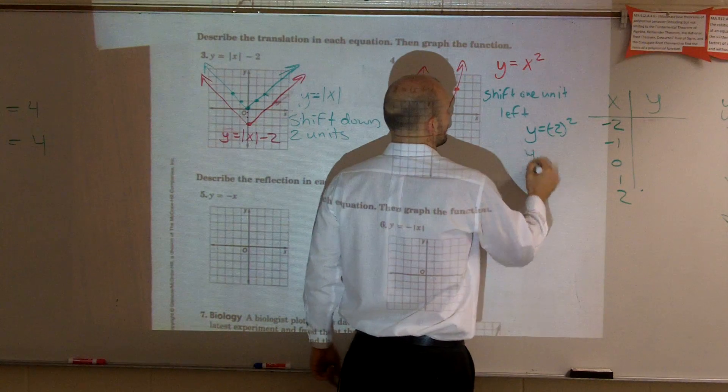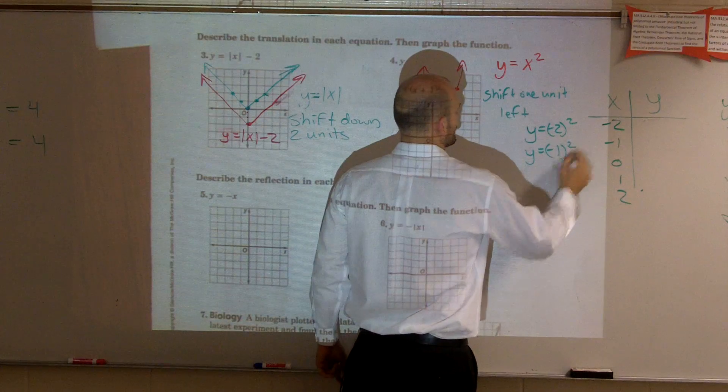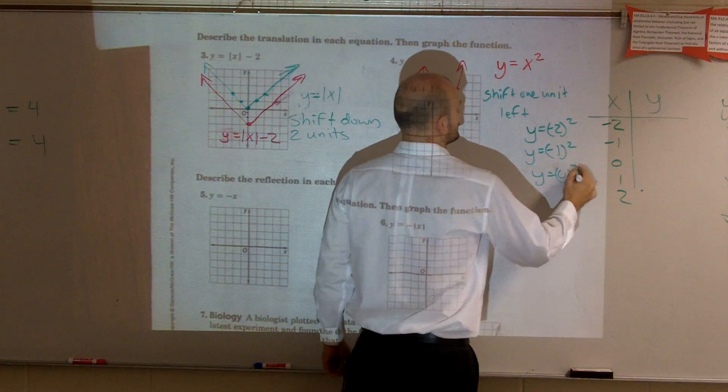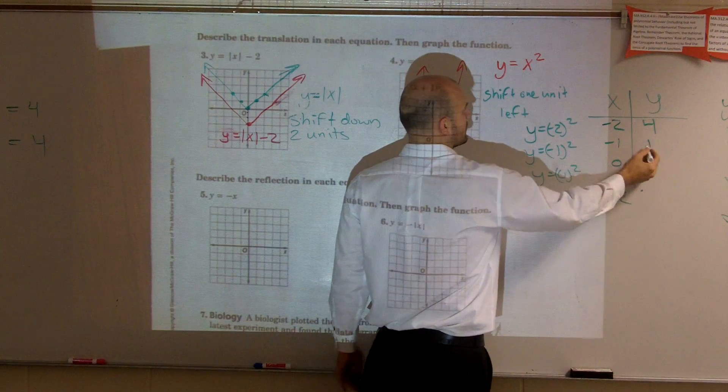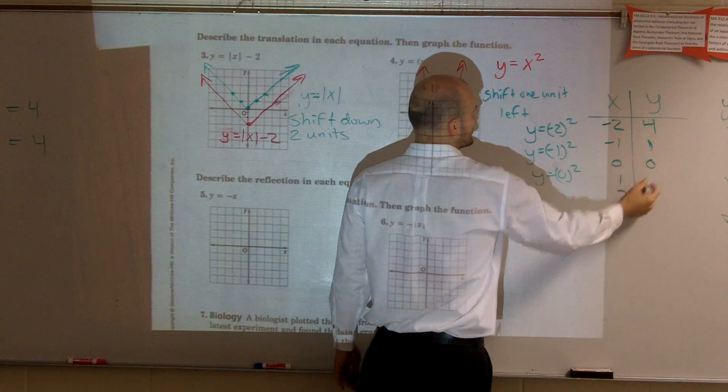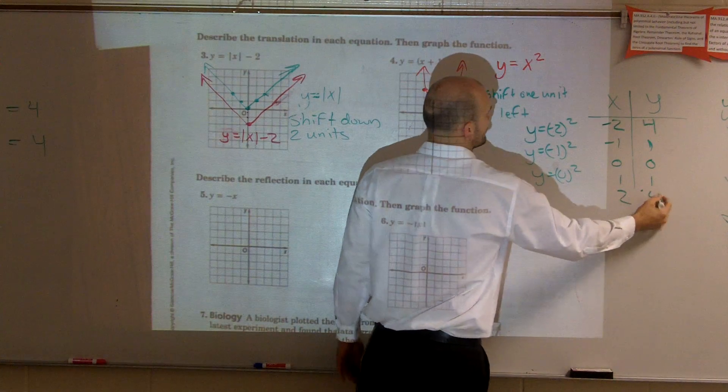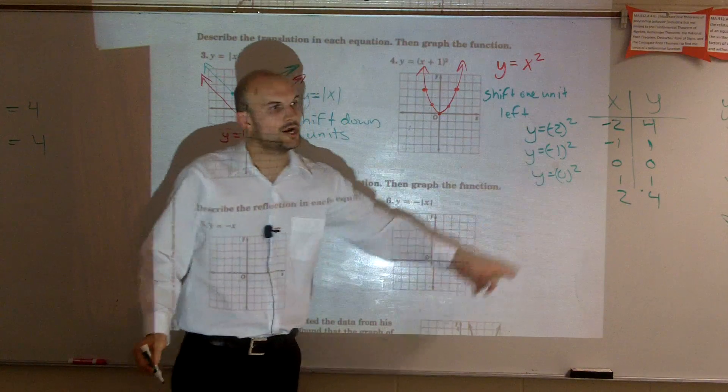Negative 2 squared. y equals negative 1 squared. y equals 0 squared. And you do it for all of them. What's negative 2 squared? 4. Negative 1 squared? 1. 0 squared? 0. 1 squared? 1. 2 squared? 4. Then you plot all those points.